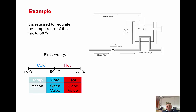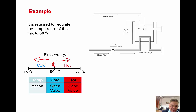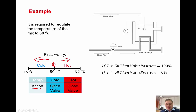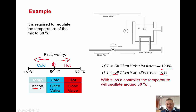The first approach: if 50 is my desired temperature, then if it's above 50 I say it's hot; if it's below 50 I say it's cold. If it's cold, the action is to open the valve; if it's hot, the action is to close the valve. This is like a relay controller — an open/close action. Implementing it is just two simple if-then statements: if temperature is less than 50 then valve position is open; if temperature is greater than 50 then valve position is closed, or zero percent.